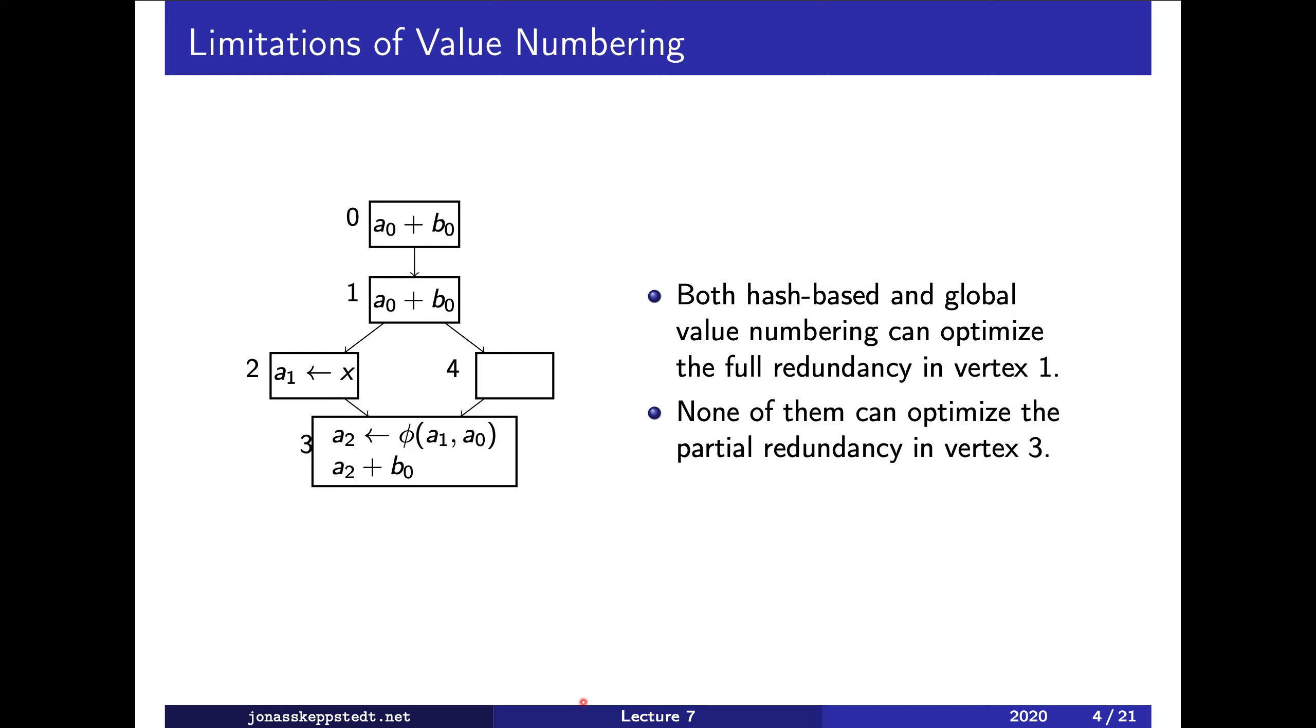The global value numbering can optimize away this expression since it's fully redundant. However, here we destroy the value of the expression since we give one of its operands a new value, and therefore this occurrence of the expression cannot be optimized away by value numbering. As we will see soon, it can be done by PRA.